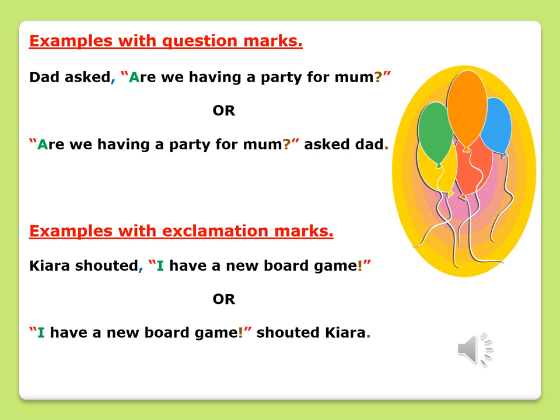There are also other examples with exclamation marks. Kiara shouted, "I have a new board game!" The spoken sentence "I have a new board game!" has been written within quotation marks with an exclamation mark. Or you could write it as: "I have a new board game!" shouted Kiara. Once again the spoken sentence is within red quotation marks, and the sentence ends with an exclamation mark. Therefore, we do not use a comma. So when writing sentences in direct speech with a question mark or exclamation mark, if the name comes at the end, we do not use a comma — we include either the question mark or exclamation mark, and a full stop at the end.